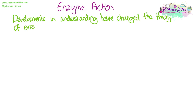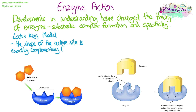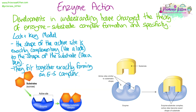The model or theory of enzyme action has changed over time as we've developed our understanding through new molecular techniques, so this is an example of how science develops. The original model was known as the lock and key. You might have looked at this at GCSE. It's where the shape of the active site is exactly complementary — like a lock — to the substrate, which is like the key. They fit together exactly, forming an enzyme-substrate complex.